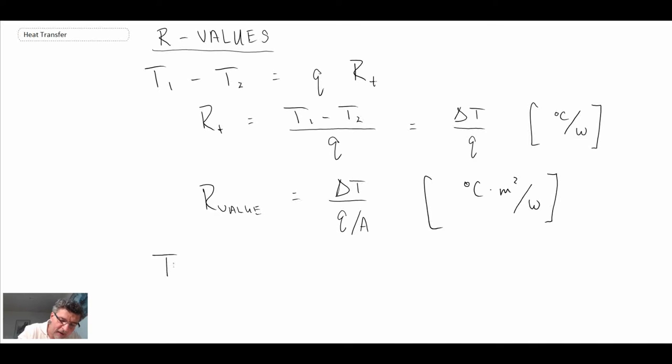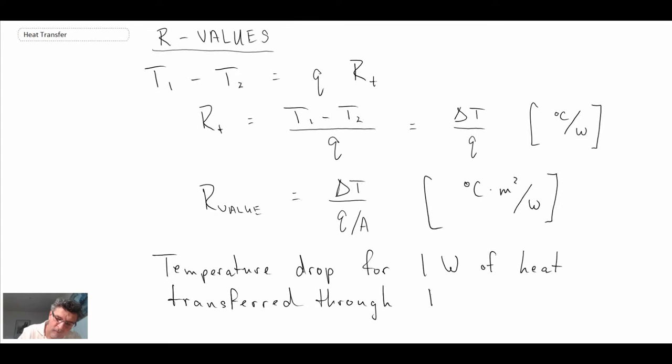You can see if you have one watt and one square meter, Q over A is then going to be equal to one. If you put one into this equation, then R-value is equal to delta T. And that's how we get that relation. Now, the R-values that you find in hardware stores, however, those are not in SI. So we'll take a look at that.